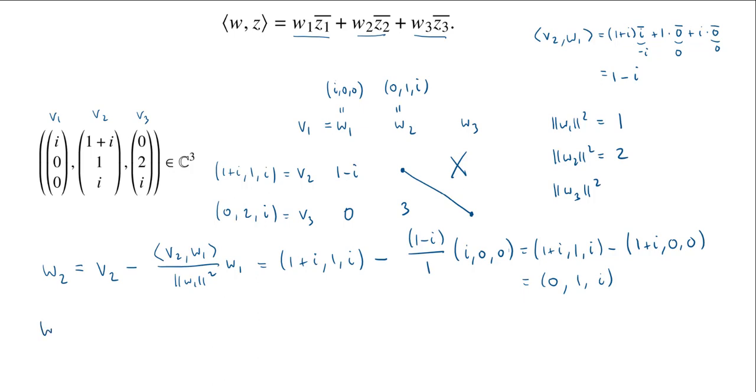Here we go, now we're going to compute W3. This will be V3 minus the inner product of V3 and W1 over the square of the length of W1 times W1, minus the inner product of V3 and W2 over the square of the length of W2 times W2.